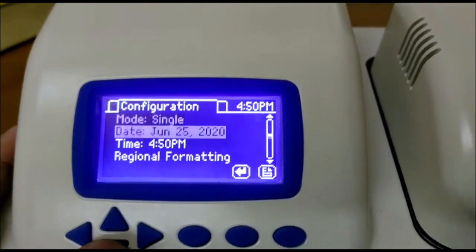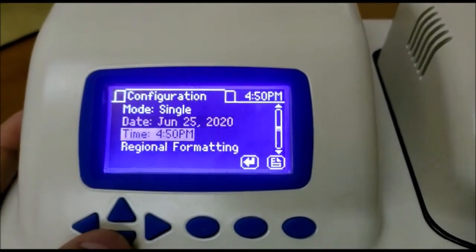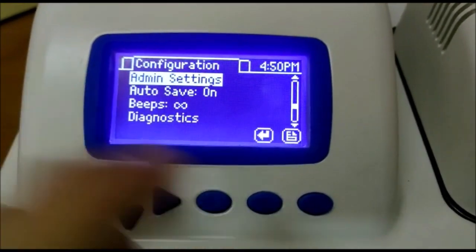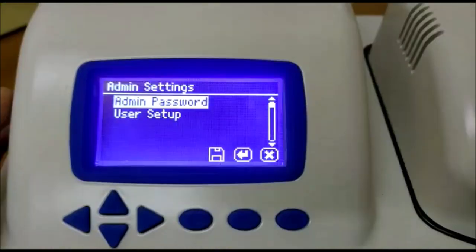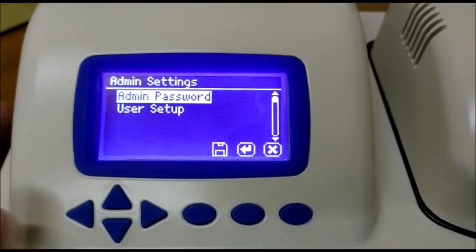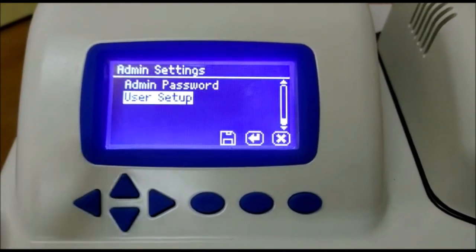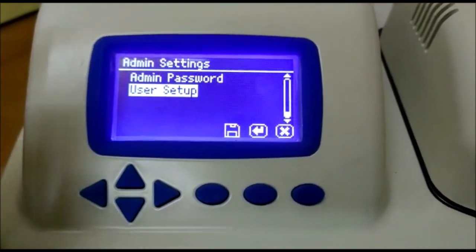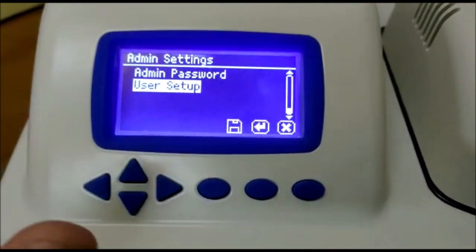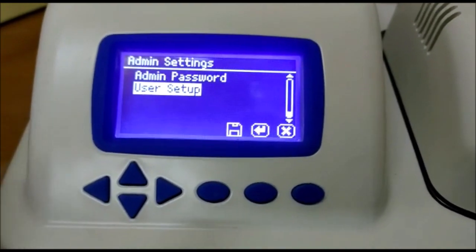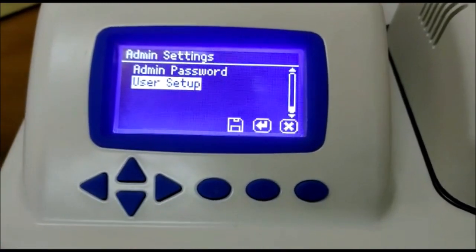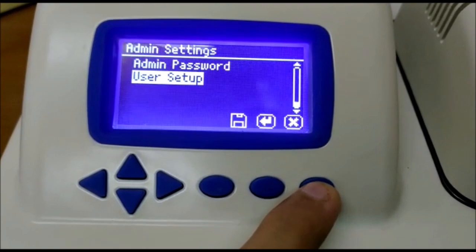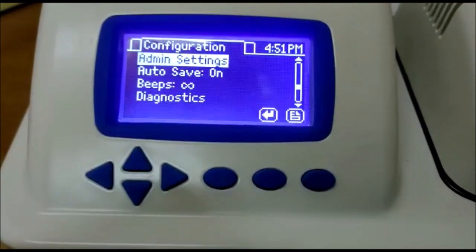Rest of the things are date. You can change date, time, regional formatting that includes languages. Admin settings. This is one of the important features. Here you can set a master admin password and that admin can make 25 users. And all the regulations of the users will be done by admin only. He can lock calibration or any other settings for the users. You can do that in admin mode.